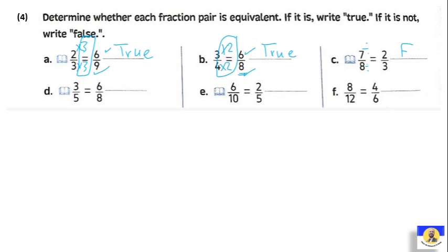Three over five and six over eight: if we do three by two we get six, but five by two gives ten, not eight — so it's false. Six over ten and two over five: six divided by three equals two, but ten divided by three doesn't give five — ten divided by two equals five, so different numbers were used — it's false. Eight over twelve and four over six: eight divided by two equals four, and twelve divided by two equals six — up and down by the same number — so it's true, equivalent fractions.